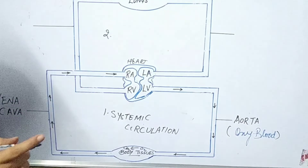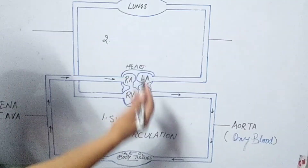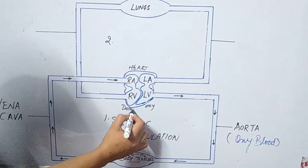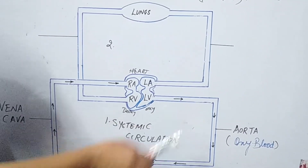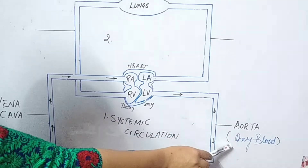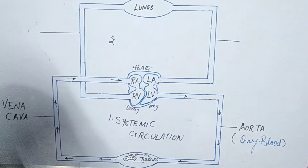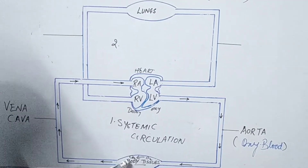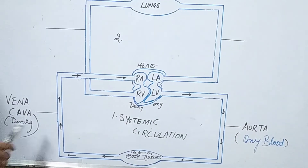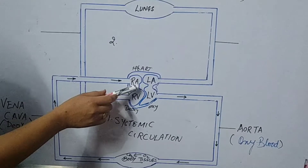The carbon dioxide combines with hemoglobin, and about 70% is dissolved in the plasma. This deoxygenated blood enters the blood vessel known as the vena cava, which takes the blood to the right auricle. The left part of the heart always carries oxygenated blood, and the right side always carries deoxygenated blood. This completes the systemic circulation.